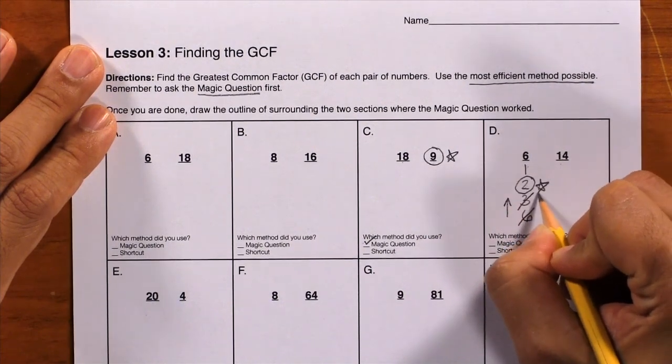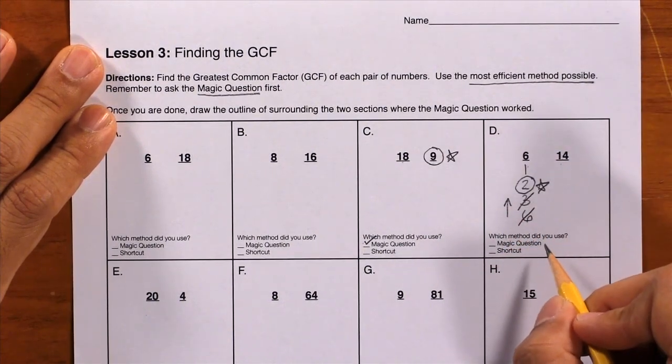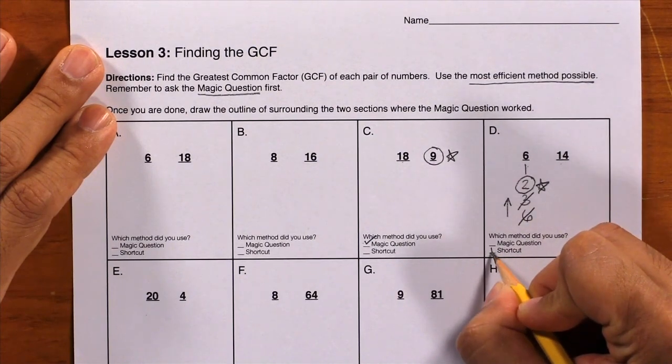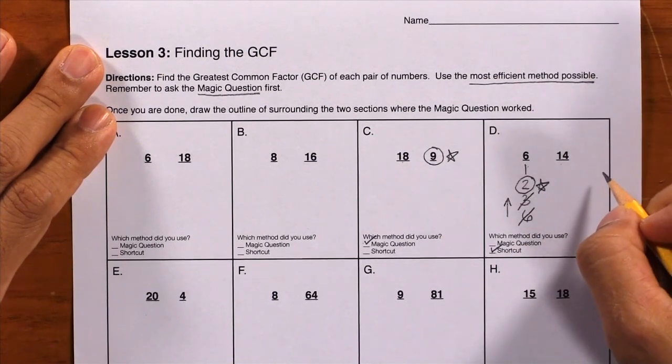Circle and star, and you're done. Which method did we use? We used the shortcut, so we'll check that off. And that is lesson 3.